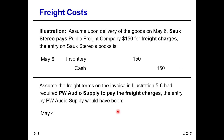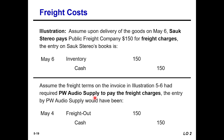Second scenario: assume the freight terms on the invoice in Illustration 5.6 required PW Audio Supply to pay the freight charges. The journal entry by PW Audio Supply would be Freight-Out debited and Cash credited. This illustrates the difference between FOB Shipping Point and FOB Destination.